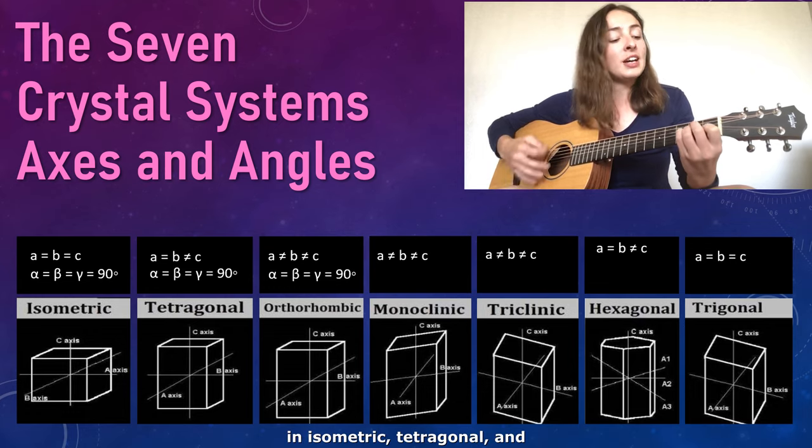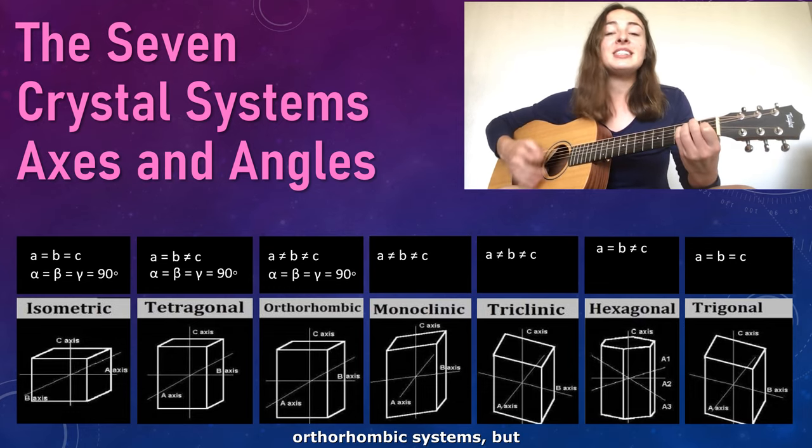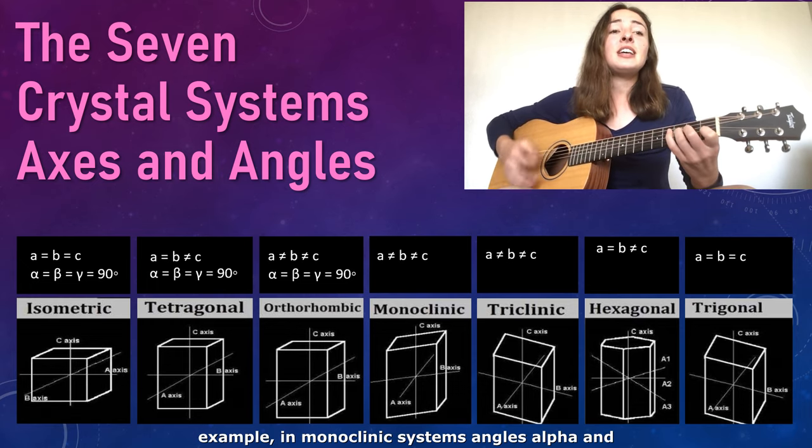Moving on to the angles, these are equal to 90 degrees in isometric, tetragonal, and orthorhombic systems. But the others are not so simple.